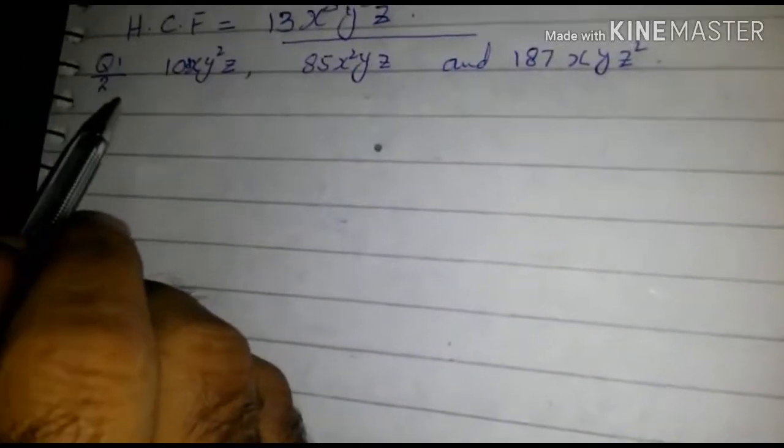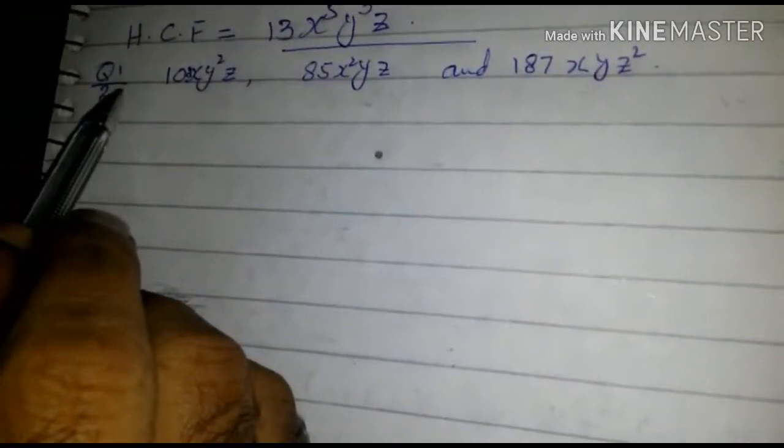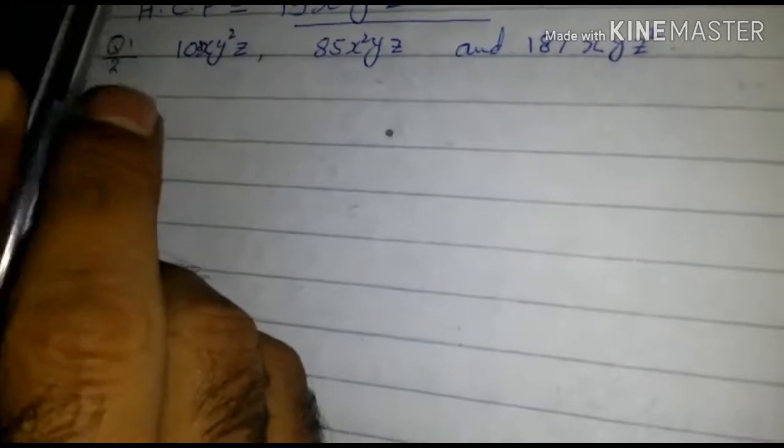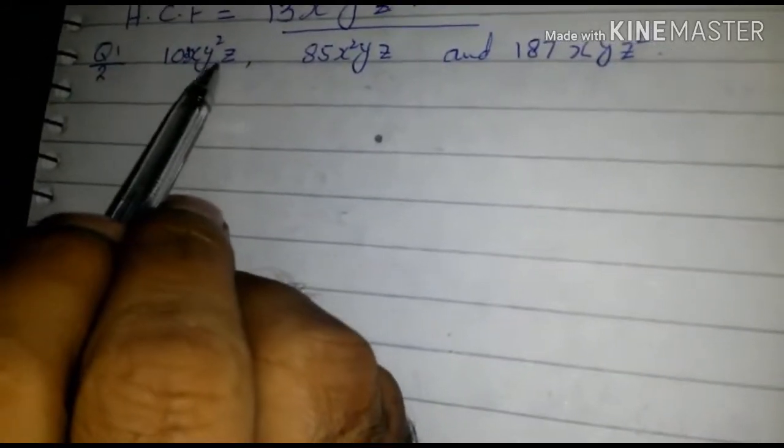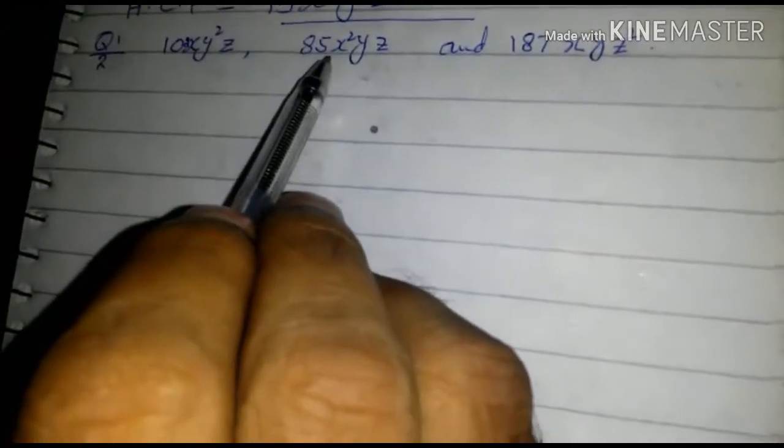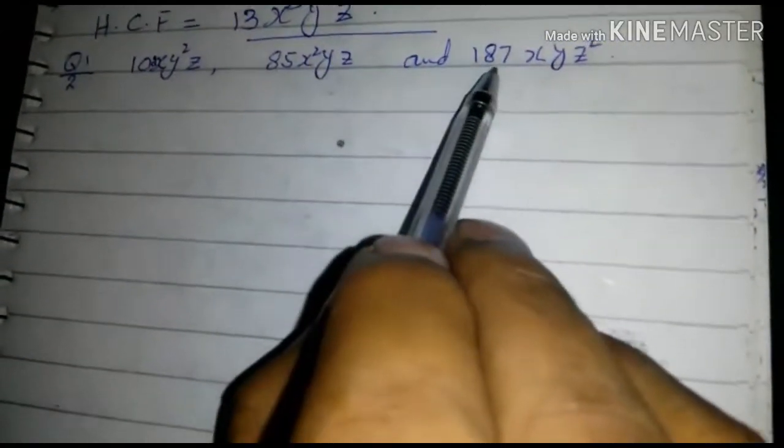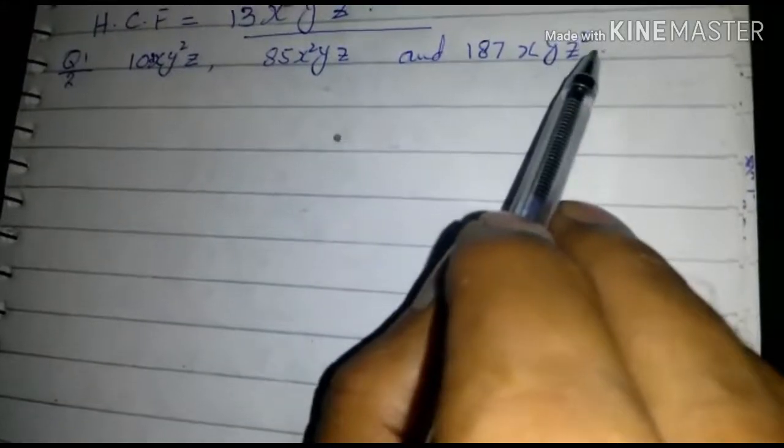As you know, we are solving exercise 6.1 question number one. Find HCF of 102xy²z, second expression is 85x²yz, and 187xyz². Let's solve this.